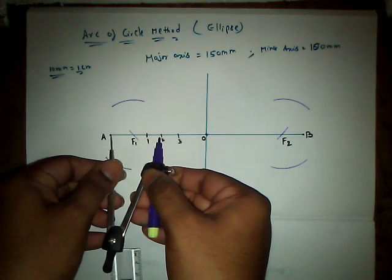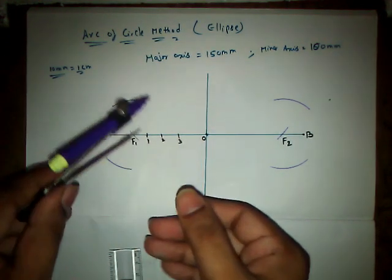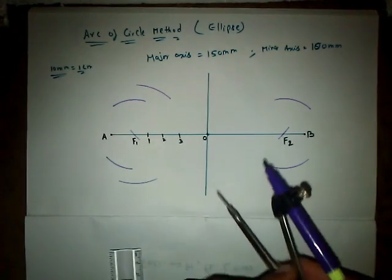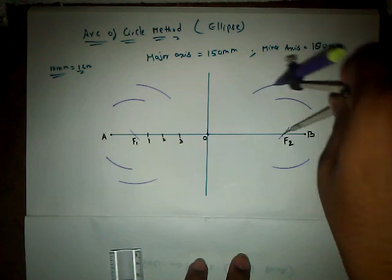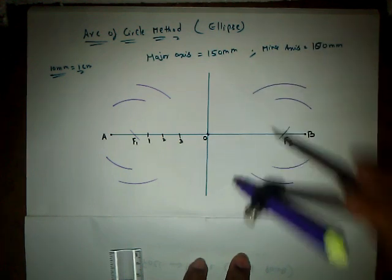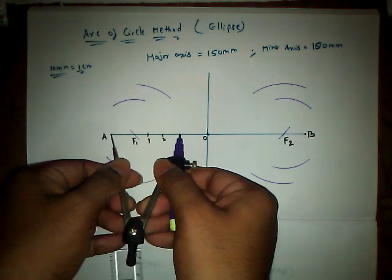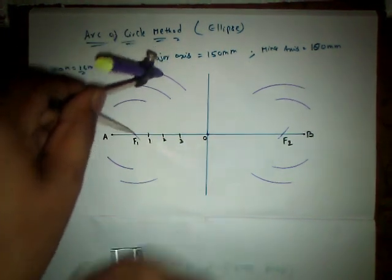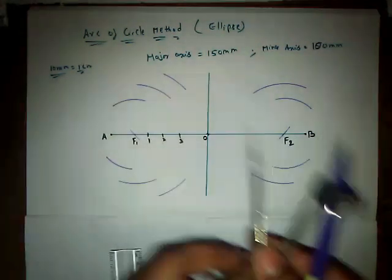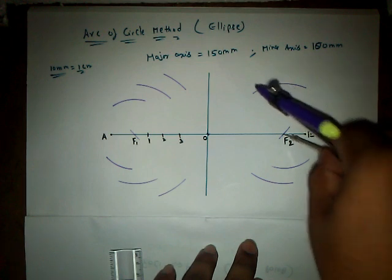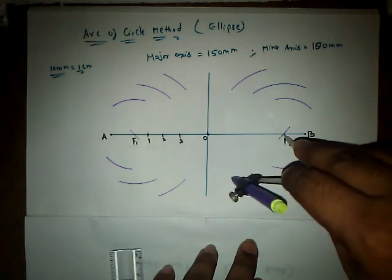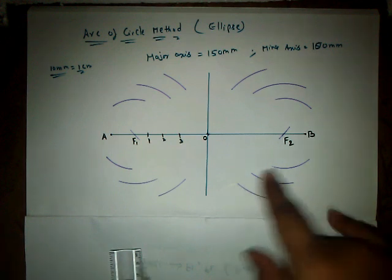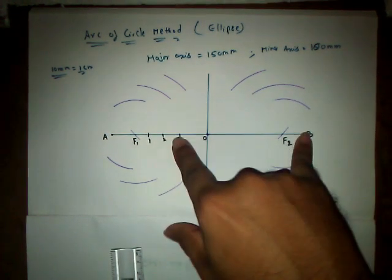With the same radius, keep it on F2 as center and cut the arcs. Now with A22 as radius, with F1 as center, cut the arcs at the top and cut the arcs at the bottom, and go to F2 as center, cut the arcs here and arc at the bottom. Now with A23 as radius, with the same radius, with F2 as center, let us cut the arcs at the top and as well as at the bottom. We have taken A21, A22, A23 as radius. Now in the similar manner, we have to take B21, B22, and B23.